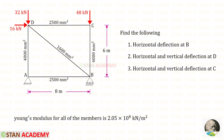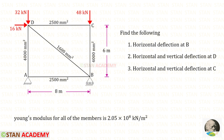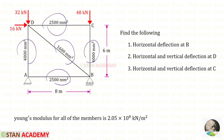Hello everyone. Today in this truss we are going to find the horizontal deflection at B, horizontal and vertical deflection at D, and horizontal and vertical deflection at C. The areas for every member are given, and the Young's modulus for all of the members is the same.